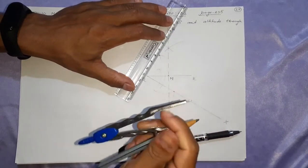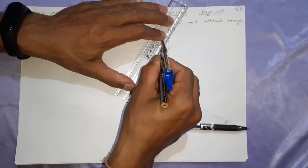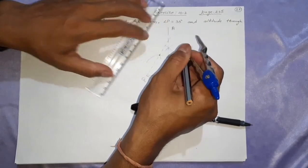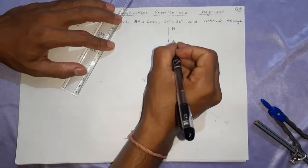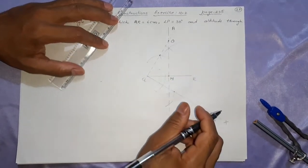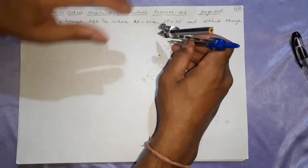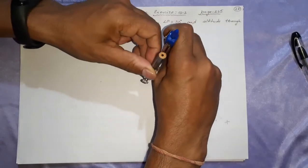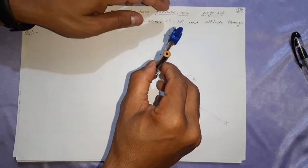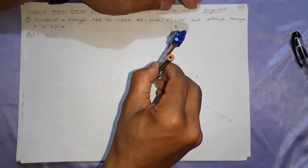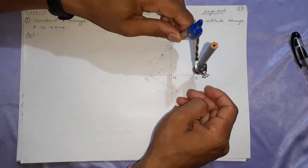I think our circle is not going to be easy, but anyway let's go. This is O. From O, you are going to make OQ — this is OQ and this is OR.